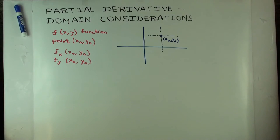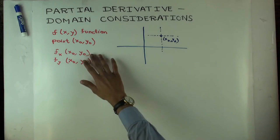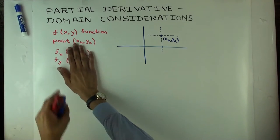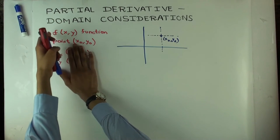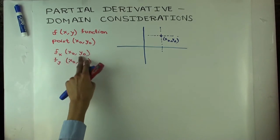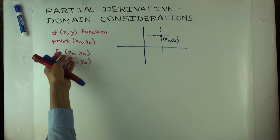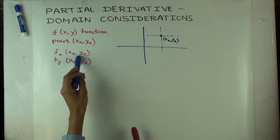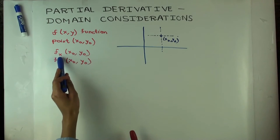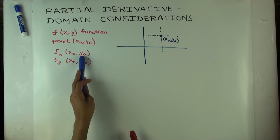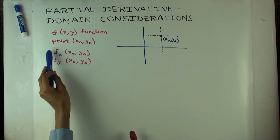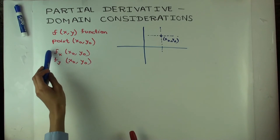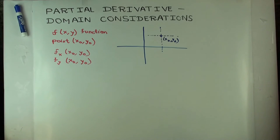For both these partial derivatives, the domain of definition is generally going to be a subset of the domain of f. In particular, you can think of defining them at a particular point only if f is defined at that point. However, you can have a situation where f is defined at a point, so the point is in the domain of f, but the partials don't exist, or one of them doesn't exist at the point.